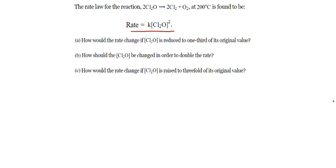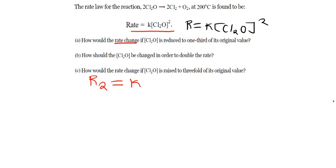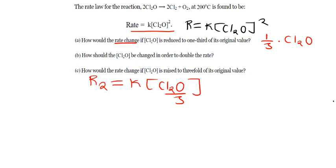For the first one, let's take our rate to be R = K[C₂O]², that's the rate law. Now for the first one, how would the rate change if we reduce the concentration to one third of the original value? I'll take my new rate to be R₂. What is changing is the concentration — it's changing to one third of the original value C₂O, so that's C₂O over three. Don't forget in the rate law we've got the power two.